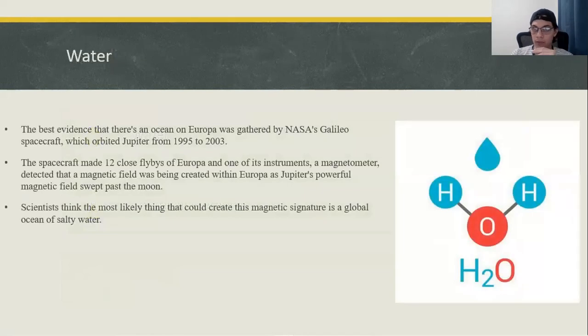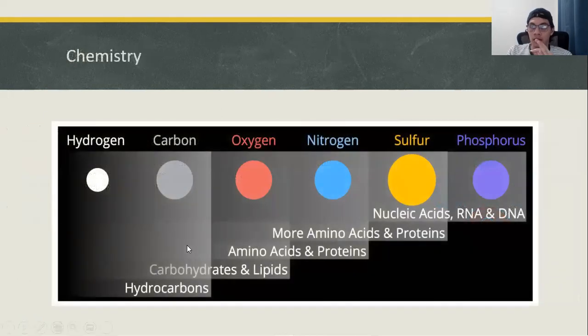First of all, the water around Europa. The best evidence that Europa has an ocean was gathered by NASA's Galileo spacecraft. Basically, the spacecraft made some flybys around Europa, and one of the instruments detected a magnetic field. The only thing that could cause this magnetic signature was a global ocean.